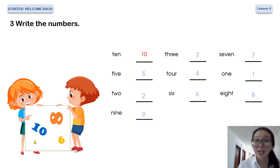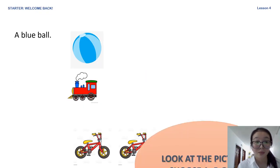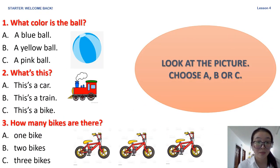Before we finish today's lesson, I will have one more small exercise for you to consolidate what we learned today. Task 3, look at the picture and choose A, B, or C. Question number 1, what color is the ball?